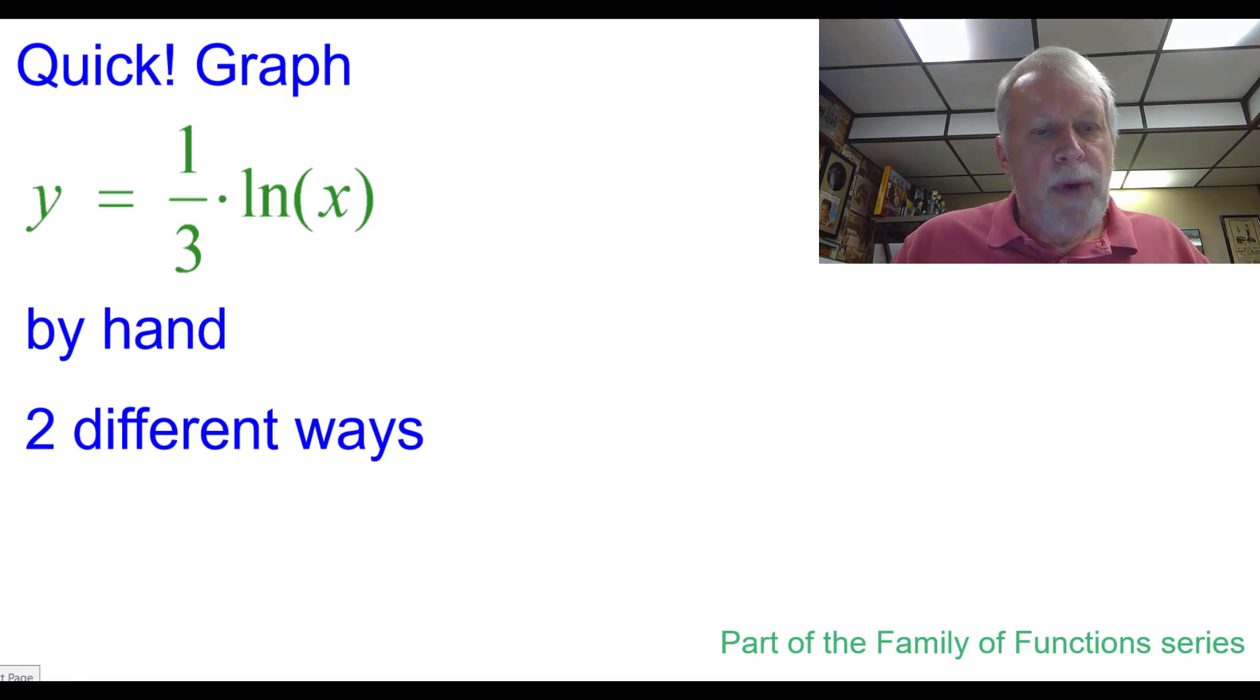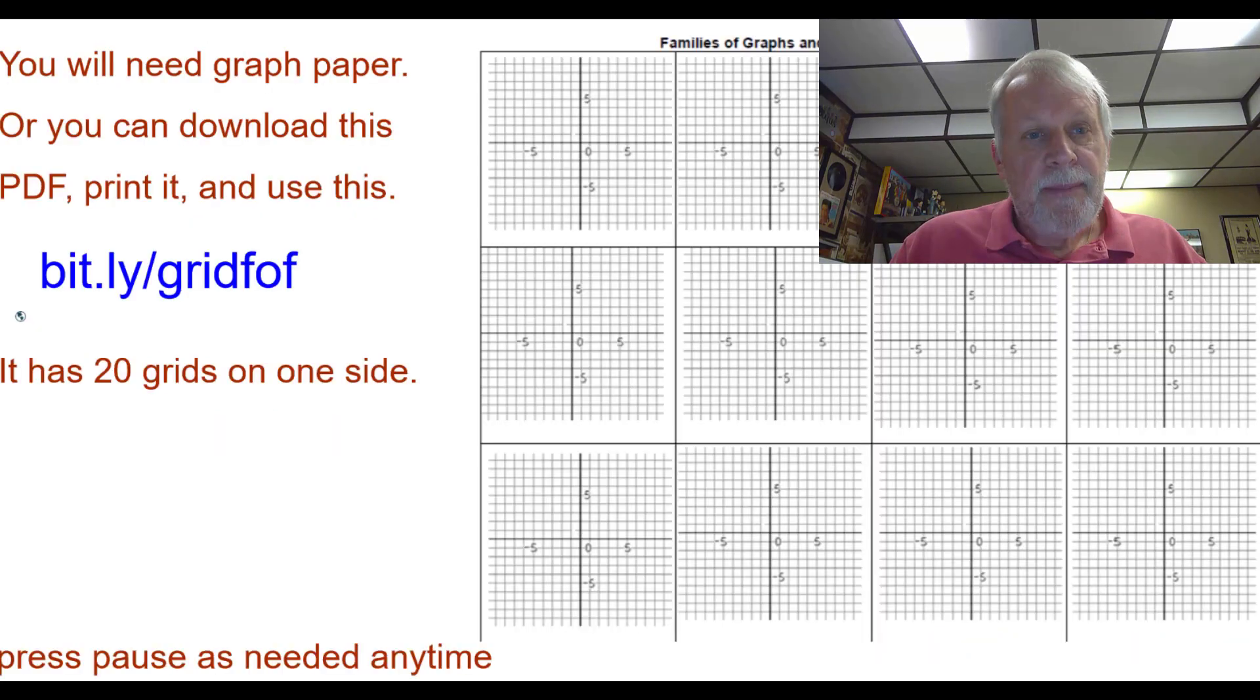Quick graph y equals one-third times the natural log of x by hand, two different ways. This is part of the Family of Functions series. You will need graph paper or you can download this PDF and print it. Press pause as needed any time during this video.